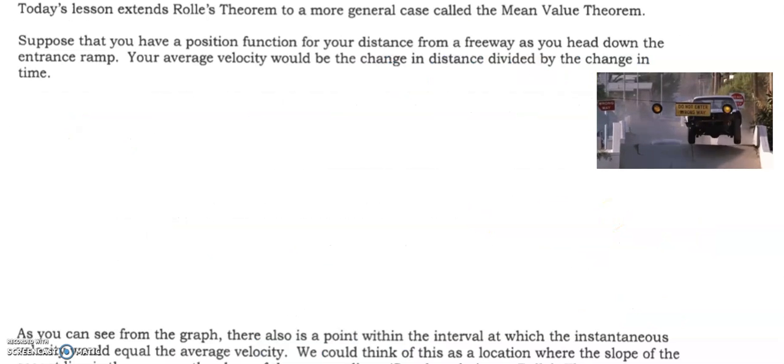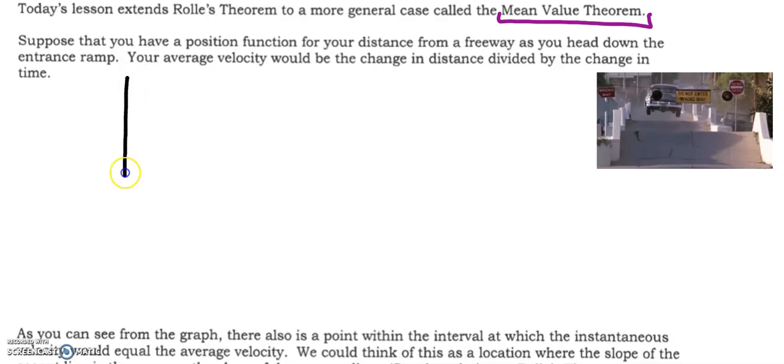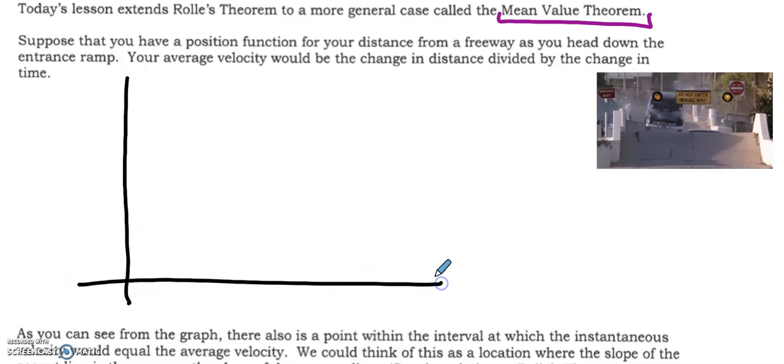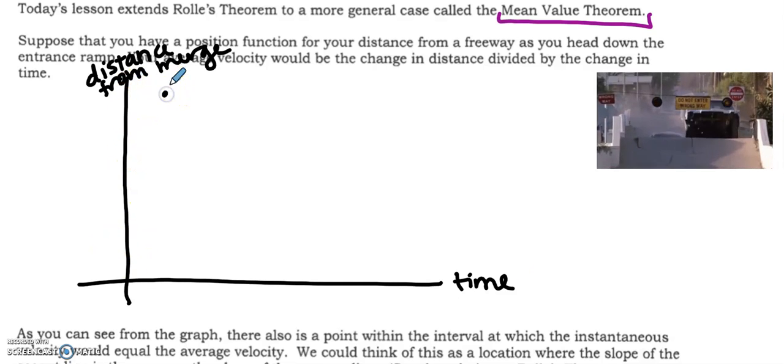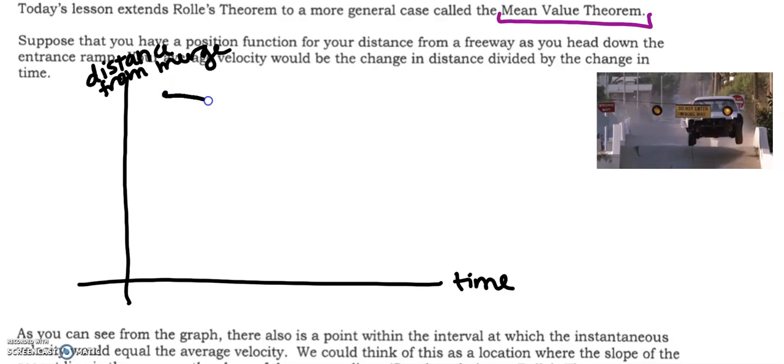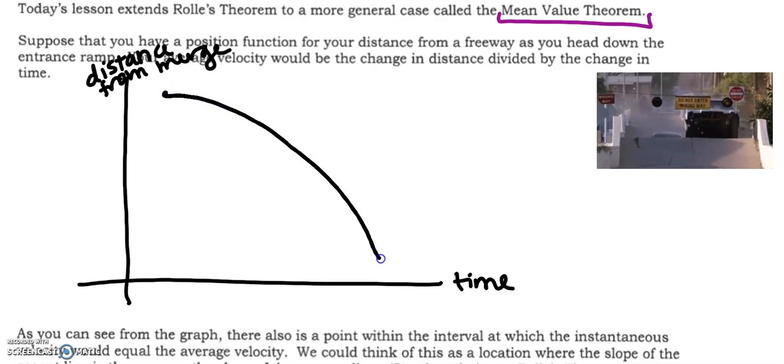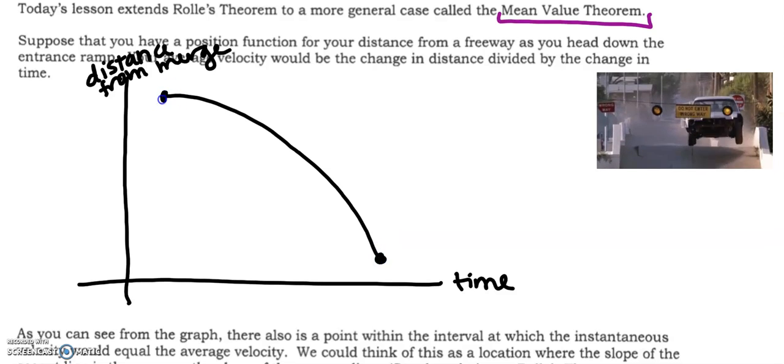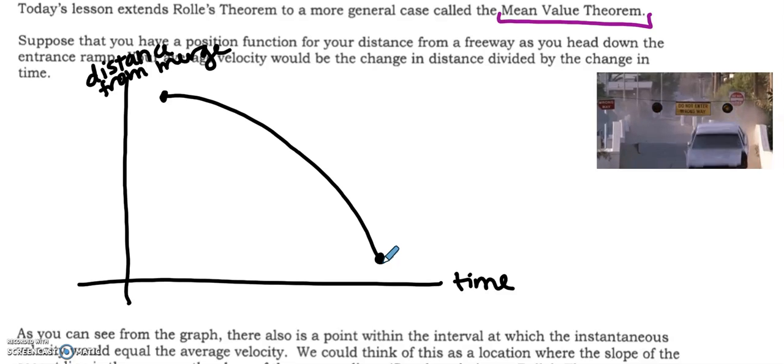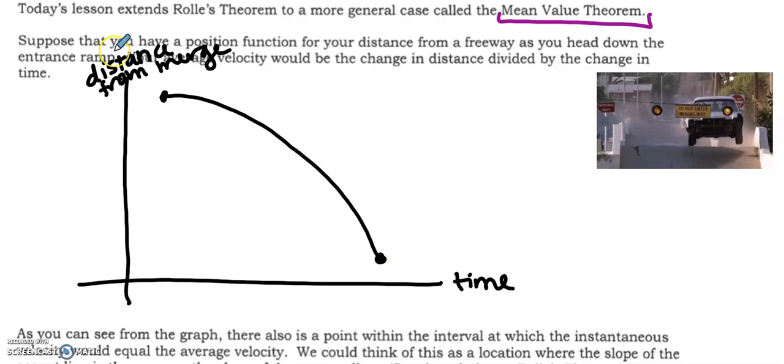All right, so let's extend that to something called the mean value theorem. The mean value theorem can be best described if we think about merging onto the highway. So here's our distance from the merge. Here's our time. So I'm going to start distance. My distance is very far away from the merge. And I'm going to be merging, speeding up until I actually get onto the freeway.